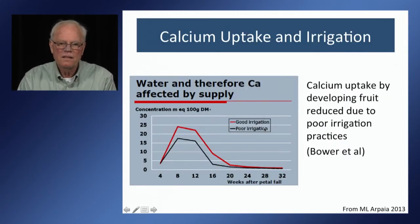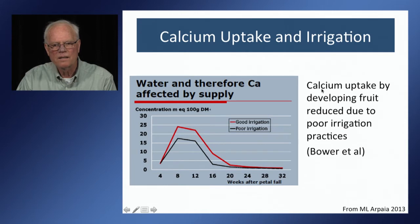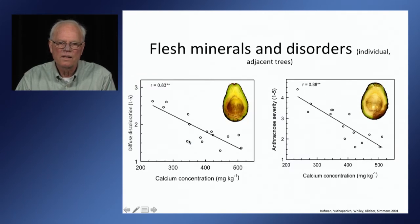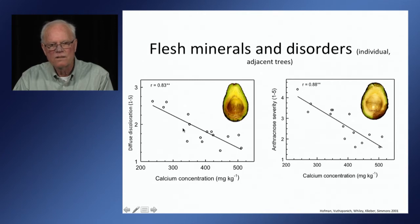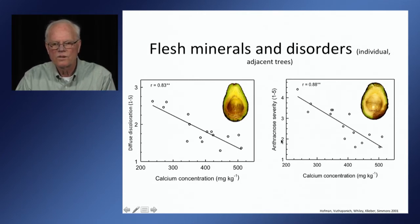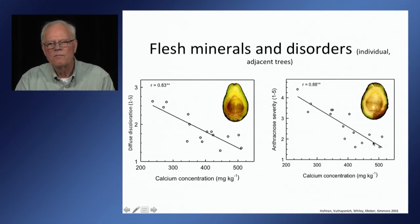Not only is the tree affected — leaves and fruit as well — but also calcium uptake. Depending on how water is managed, calcium uptake can be more than adequate for meeting the needs of the fruit, or it can be too low. Here is one consequence of a poorly managed irrigation system during drought: discoloration within the flesh of the avocado decreases as calcium concentration increases. The same is true for anthracnose, a fungal infection — its incidence and severity also diminish as calcium increases. So drought and salinity are affecting the nutrient content of the tree as well.